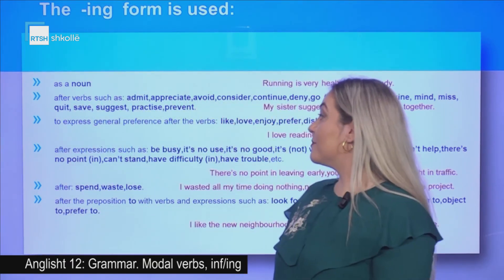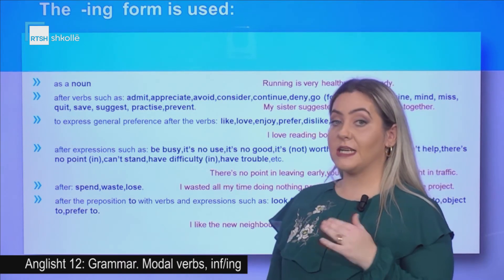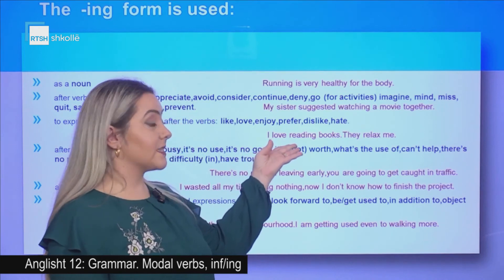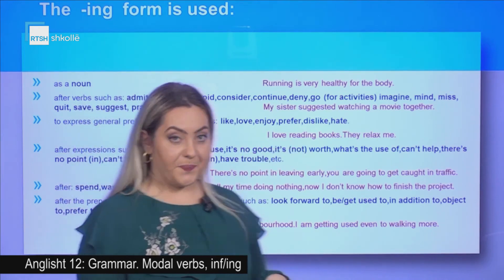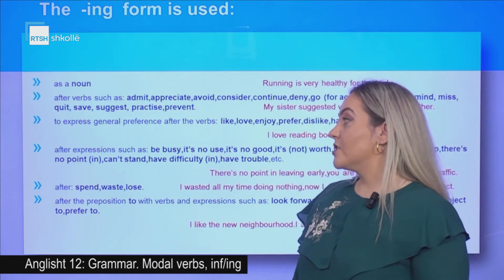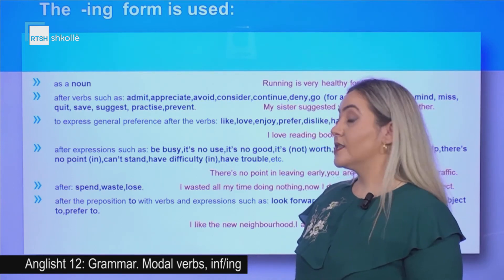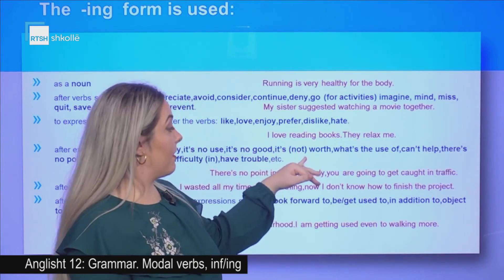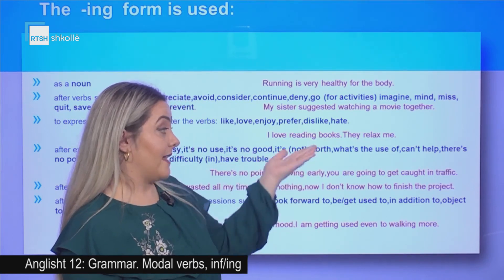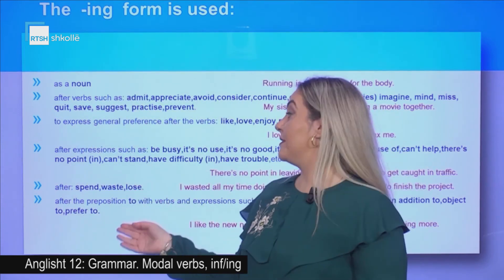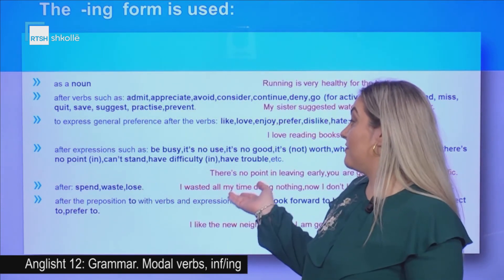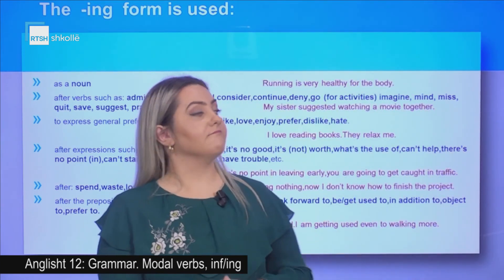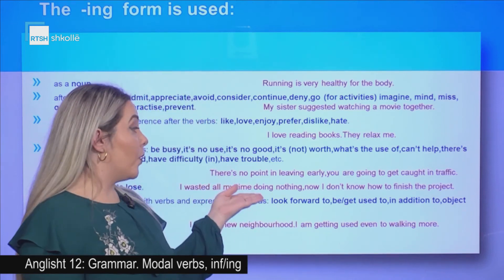The -ing form is used to express general preference after the verbs like, love, hate, etc. Example: I love reading books — they relax me. Also after expressions such as be busy, it's no use, it's no good, it's not worth, what's the use of, can't help, there's no point in, can't stand, have difficulty in, have trouble, etc. Example: there's no point in leaving early — you are going to get caught in traffic.